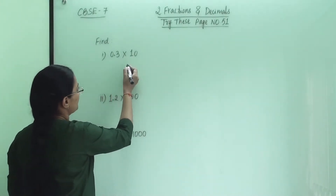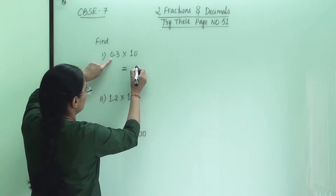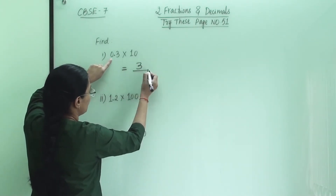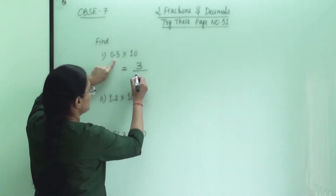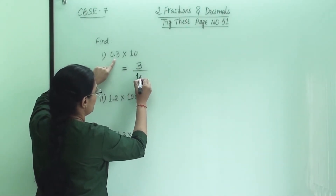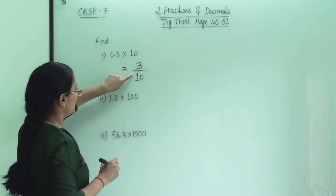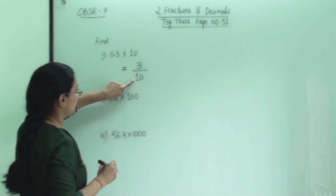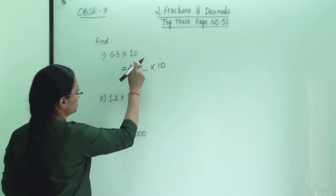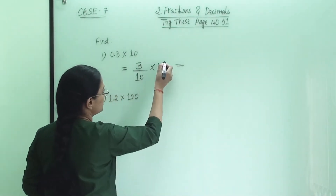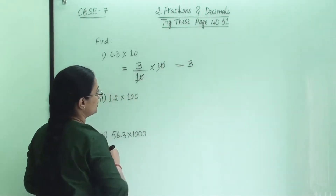So what is 0.3? We will write the number 3 and then see what its denominator will be. Its denominator will be 10 because after the decimal only one number is there. So in 3's denominator 10 will be there, and here 10 is in multiplication. So this 10 and that 10 cancel, and the answer is 3.